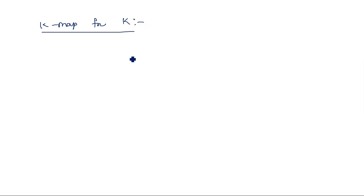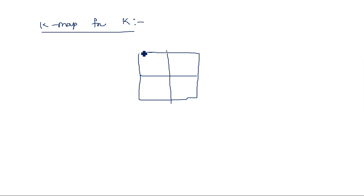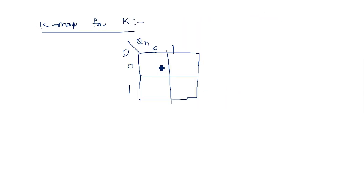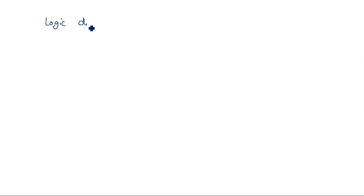K-map for flip-flop input K: with D and QN axes (0,1 / 0,1), K values are x, 1, x, 0. Grouping gives K = D̄. So J = D and K = D̄, meaning one input is directly connected and the other input K is connected through a NOT gate from input D. The logic diagram — more appropriately called a conversion diagram — follows from this.